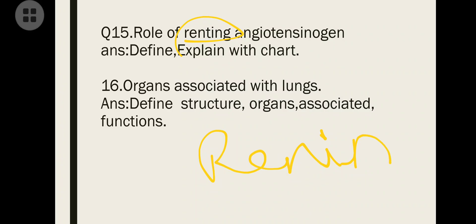Role of renin - that's R-E-N-I-N, renin-angiotensinogen mechanism. Explain with a chart. Organs associated with lungs - define lung, draw the structure. Wherever lung comes, structure is very important. Associated structures include stomach, diaphragm which is very important, also kidneys are there nearby.